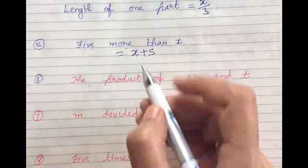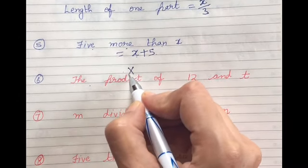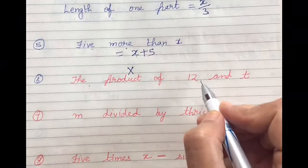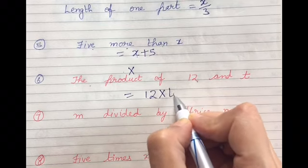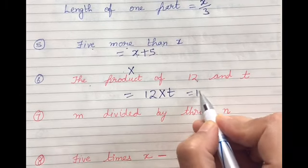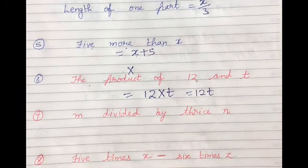The product of 12 and T, so it will be 12 multiplied by T, and we can also write this simply as 12T.